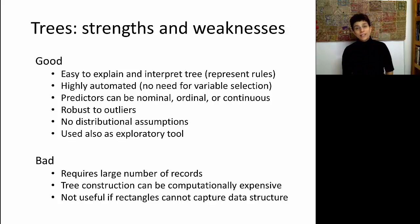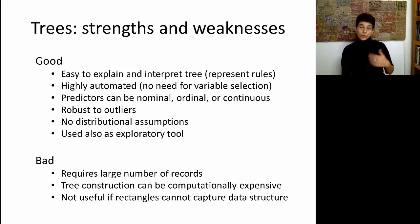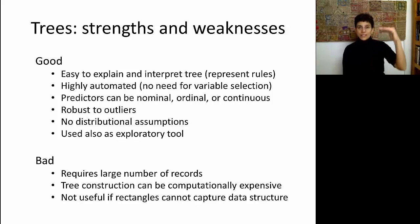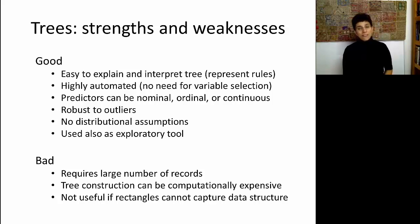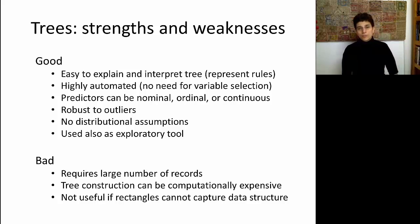Trees are also highly automated, like k-nearest neighbors and naive Bayes, unlike regression where you have to specify the equation yourself. We can also use the tree for variable selection by looking at the predictors that show up at the top of the tree. Trees can deal with all kinds of predictors — categorical, continuous, or combinations — which is very flexible. When we have outliers, they affect a tree much less than they would affect linear regression.